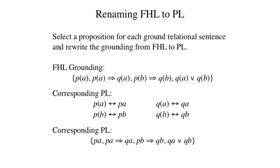For example, let's represent the FHL sentence p of a with a proposition p_a. Let's represent p of b with p_b, and let's represent q of a with q_a. Let's represent q of b with q_b. So with this correspondence, we can represent the sentences in our grounding with the propositional logic sentences shown here at the bottom.